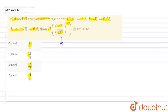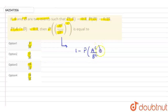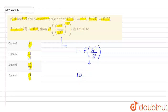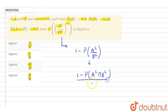First of all, this can be expressed as 1 minus the probability of A^C divided by B^C, because the total probability of an event equals 1. So it can be written as 1 minus P(A^C / B^C), which can further be written as 1 minus P(A^C ∩ B^C) divided by P(B^C).